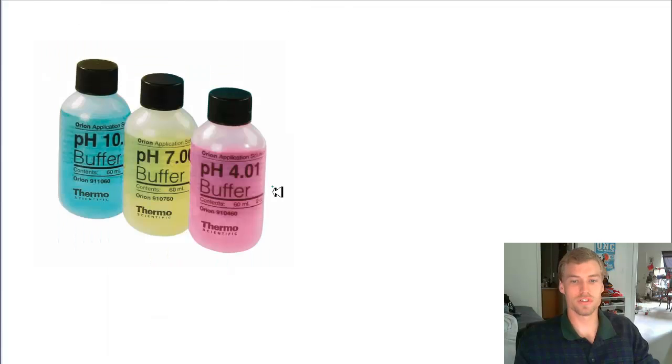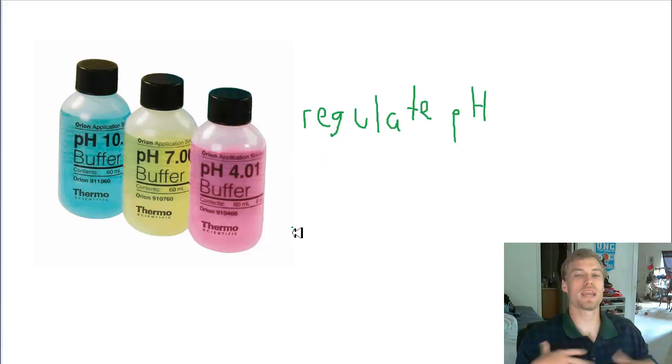So what we have in order to be able to regulate those types of things are things called buffers. So buffers are going to regulate pH. They're going to help maintain a stable pH in your body so that your enzymes can function properly. And that's incredibly important.